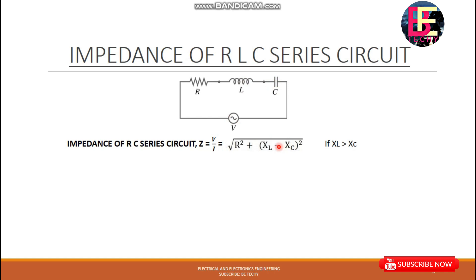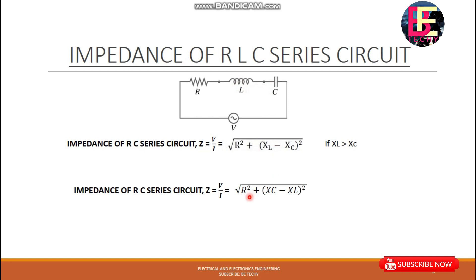Now if we have the value of XL, we have the equation to solve this. That is the root of R squared plus (XL minus XC) all squared. XL is the inductive reactance and XC is the capacitive reactance — they provide opposing opposition.